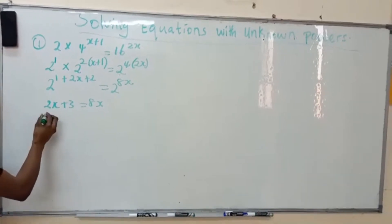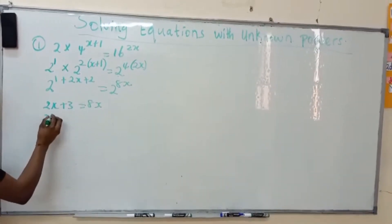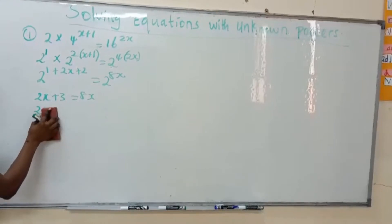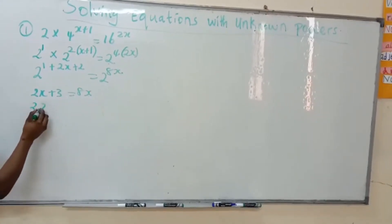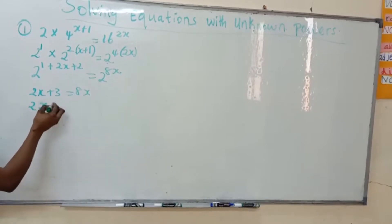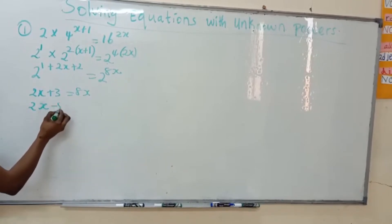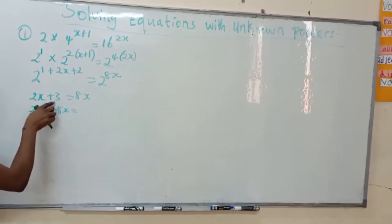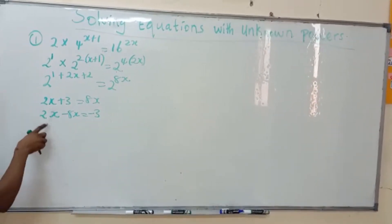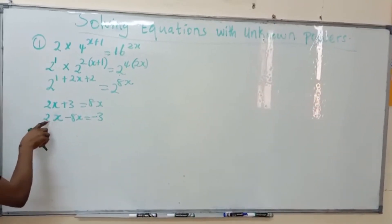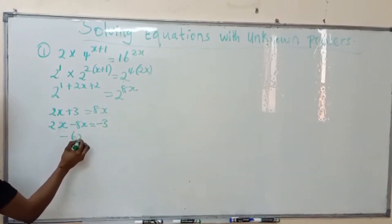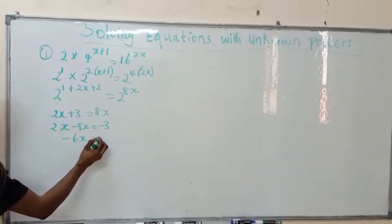We bring the x terms together. 2x, when 8x comes over it becomes minus 8x, equals minus 3. So 2x minus 8x gives minus 6x equals minus 3.